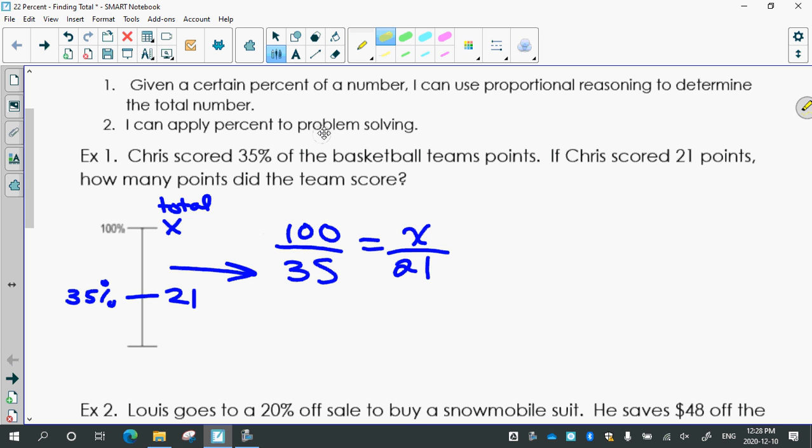Then if I know that, I can cross-multiply. 35x equals 2100, divide by 35.